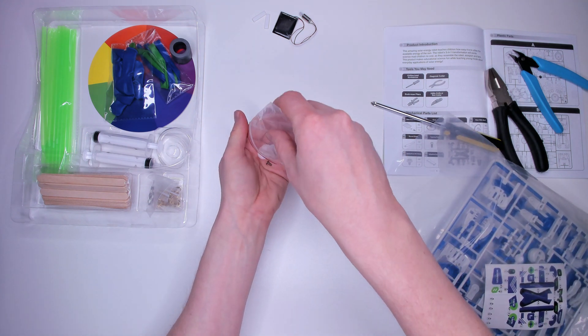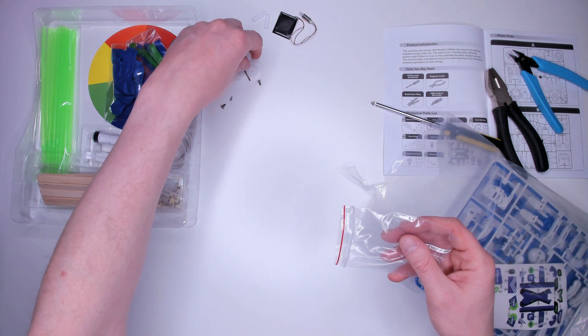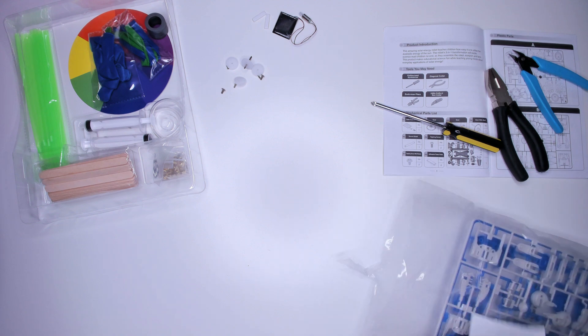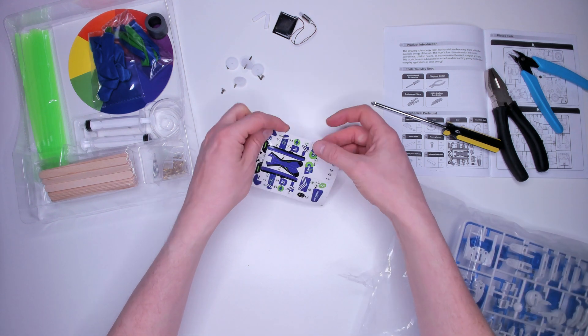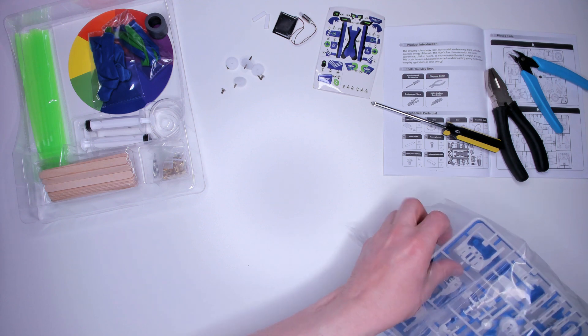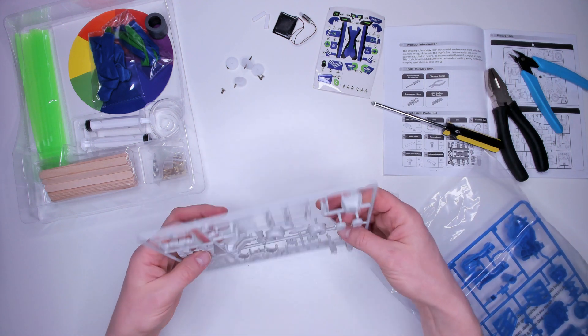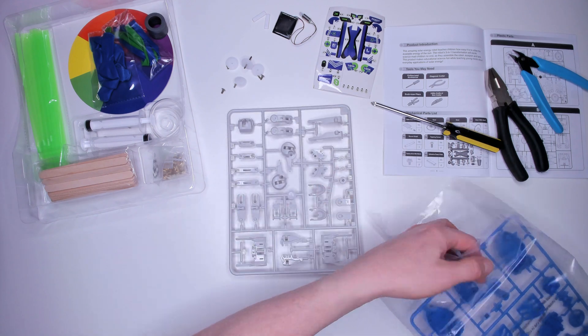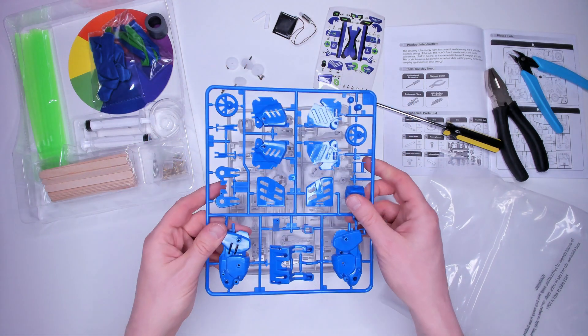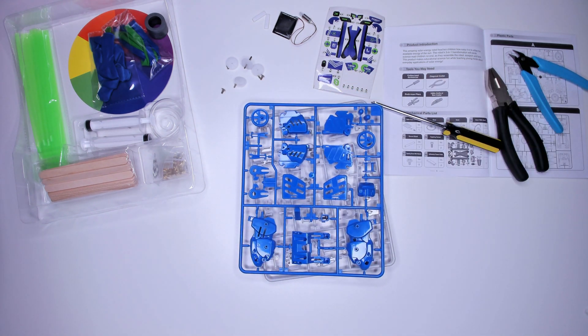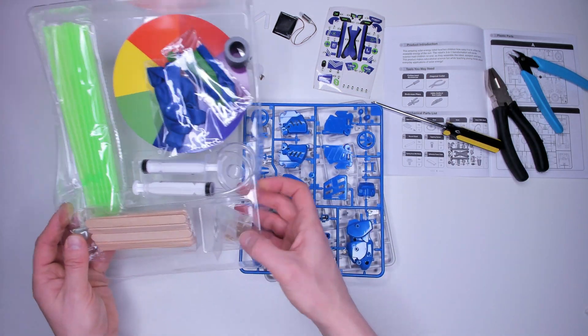Another little bag, this one has a pile of cogs in it. Now some stickers for decorating the robot. A sheet of white plastic parts. And a sheet of blue plastic parts. And we don't need anything from this box so I'll get rid of it now.